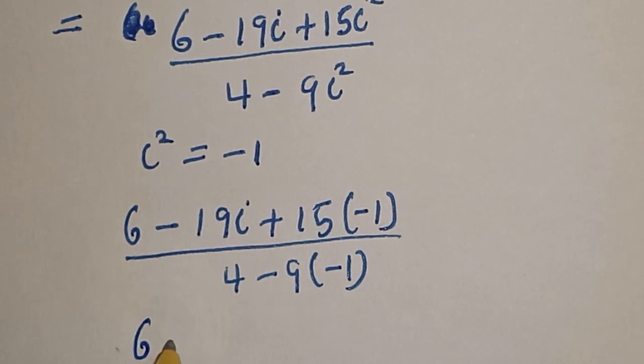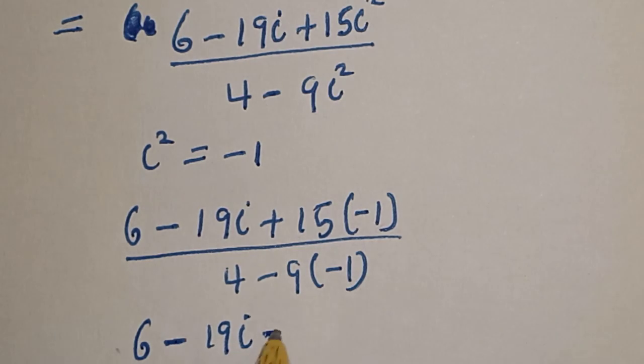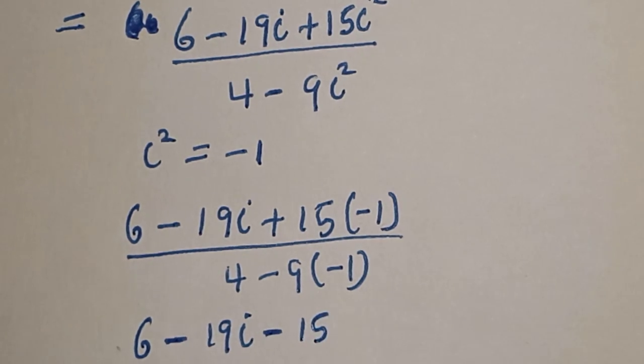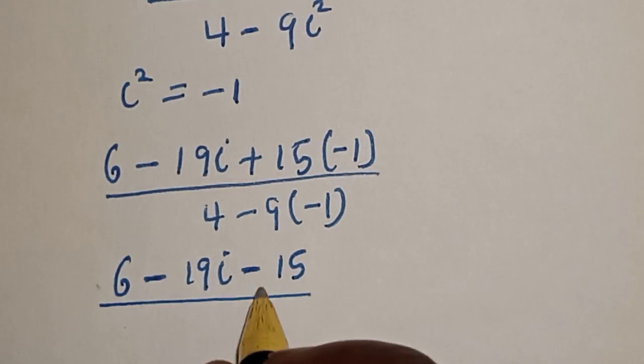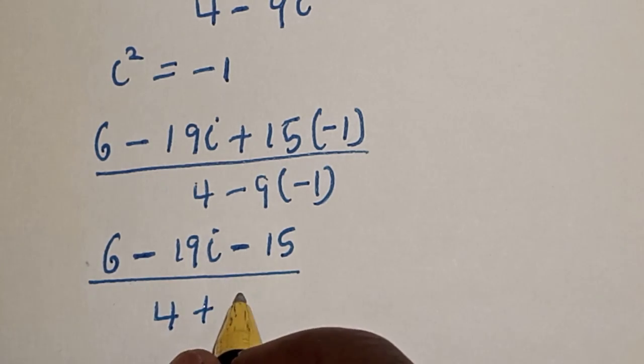So, this is 6 minus 19i minus 15 divided by 4 plus 9.